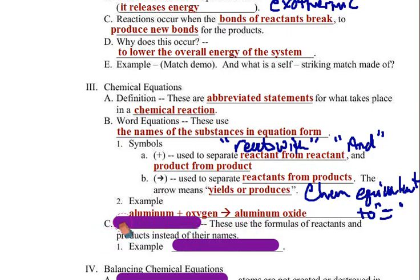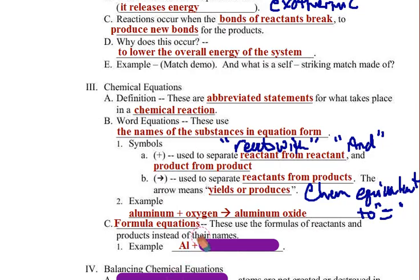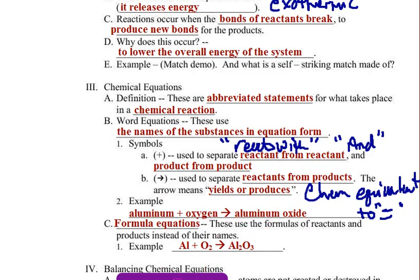Then, after word equations, we have formula equations. These are just like word equations except they use the formulas of reactants and products instead of their names. Keeping with the same equation, this would be aluminum plus O2 yielding aluminum oxide — those are the formulas for those compounds.